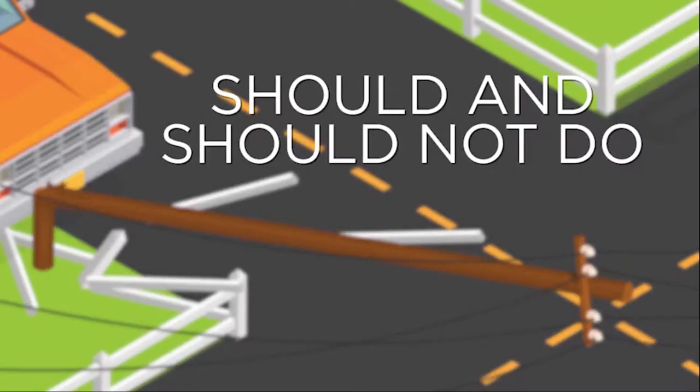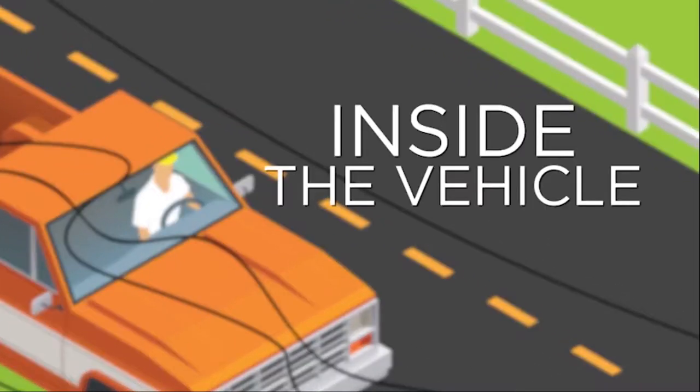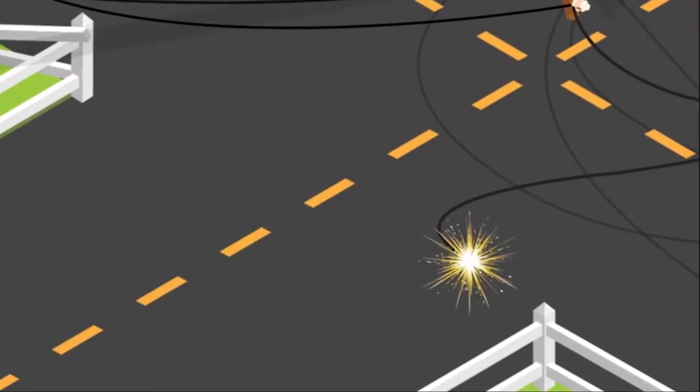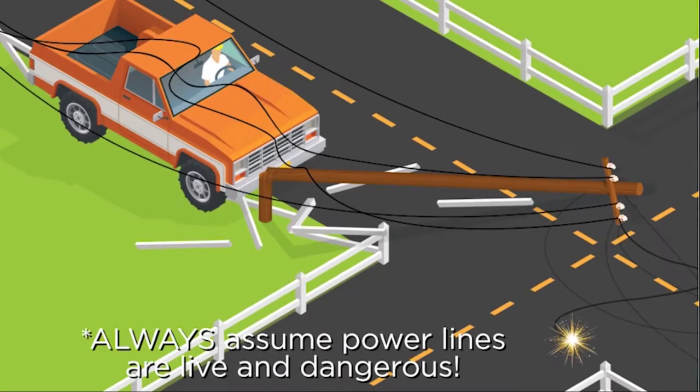Let's review what you should and should not do if you find yourself in this situation. The safest place for passengers after a collision with the utility pole is inside the vehicle, which acts as a path for the electrical current to reach the ground. You are safe inside the vehicle, but if you get out, you could be electrocuted.